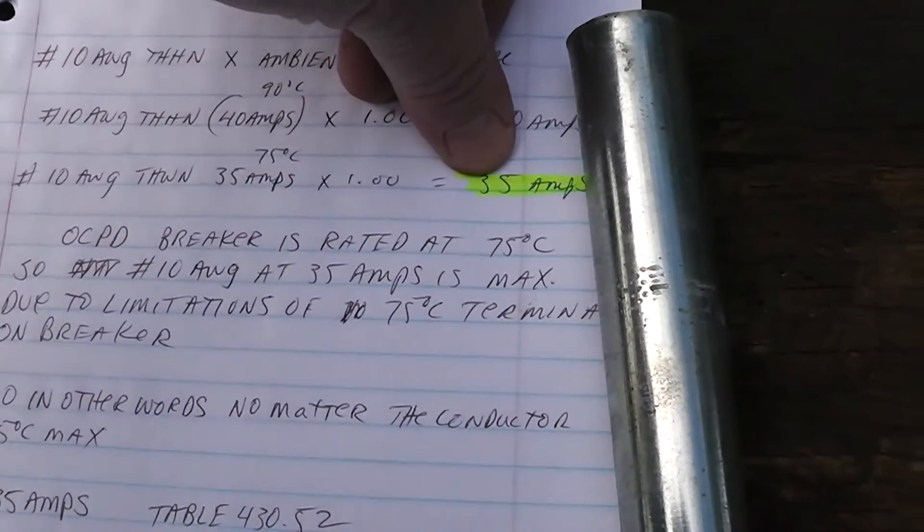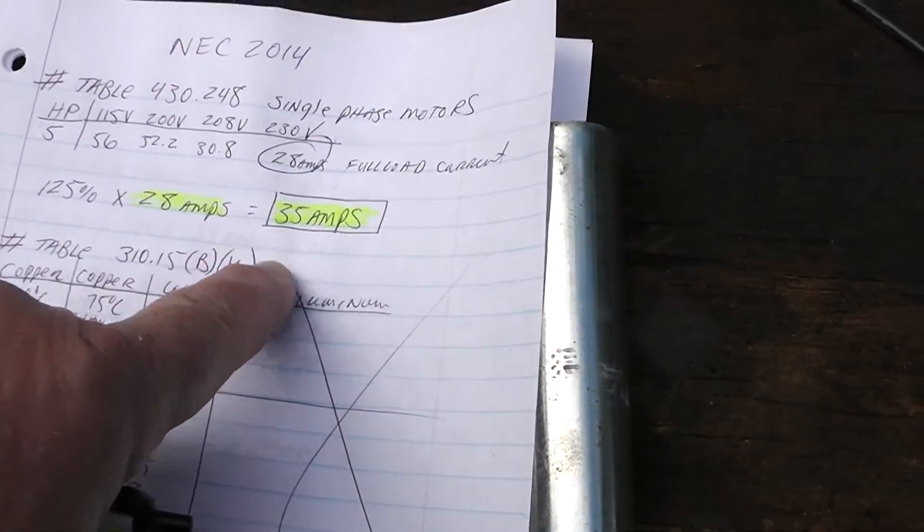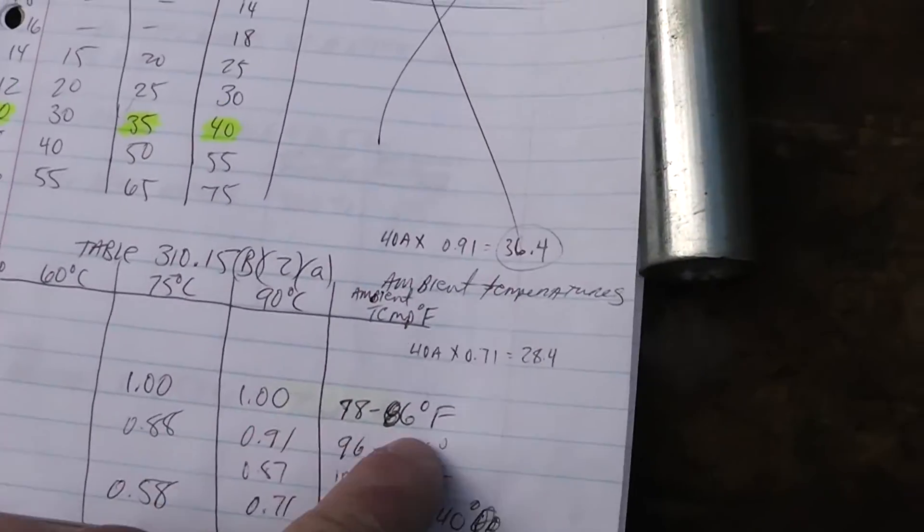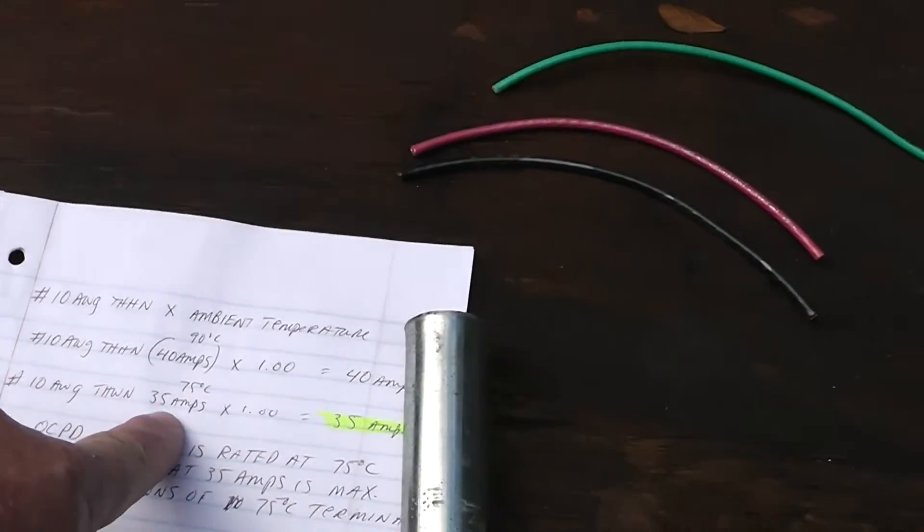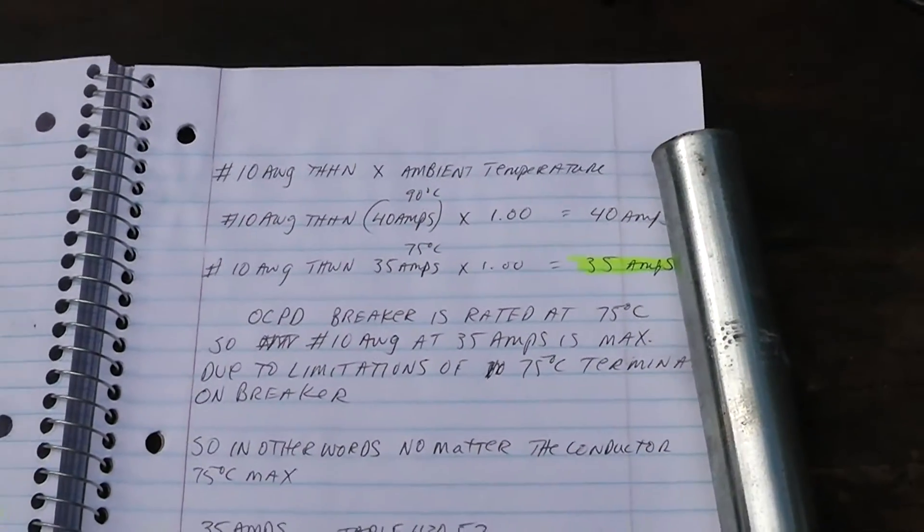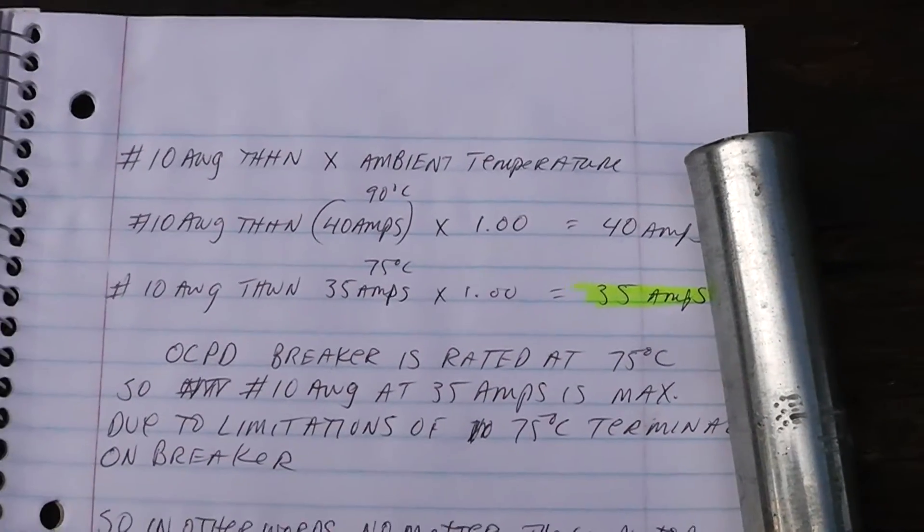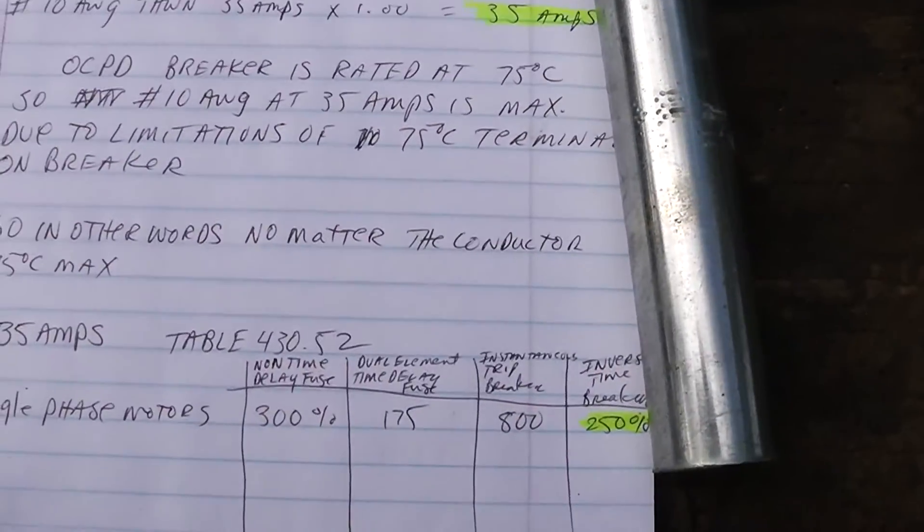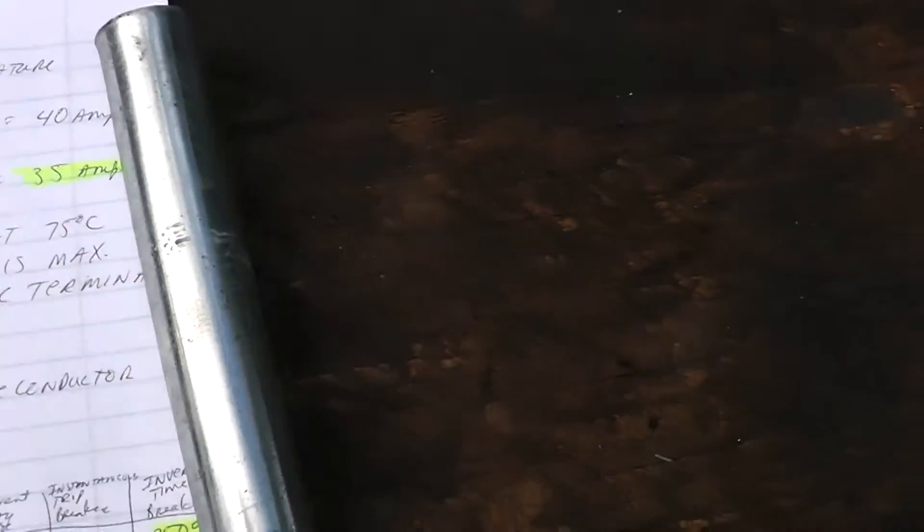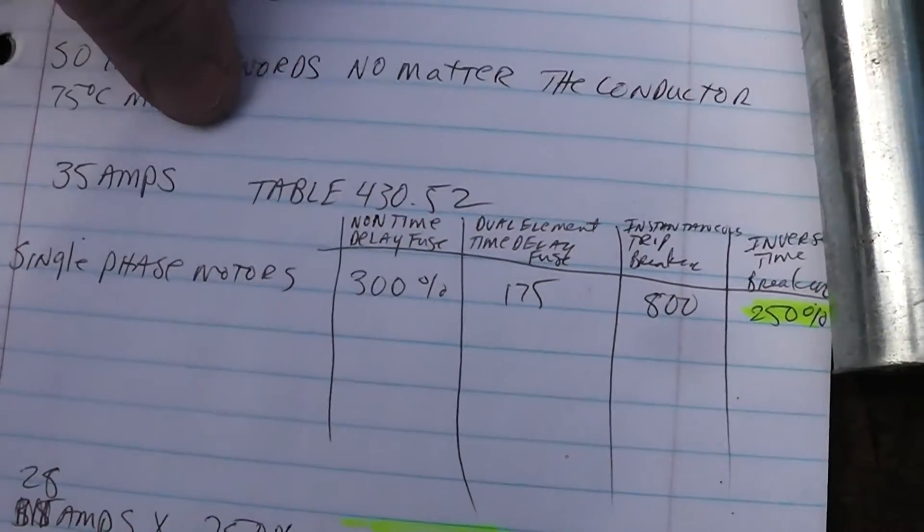If your full load amps was like 40 and you had no correction factors and you put it on that breaker, that breaker drops it down to 35 because the terminals are only rated at 75 degrees. It's like a link in a chain - you have to go by the weakest link in the chain, and when you run an electrical circuit, the weakest link in the chain are the terminals at the breaker.